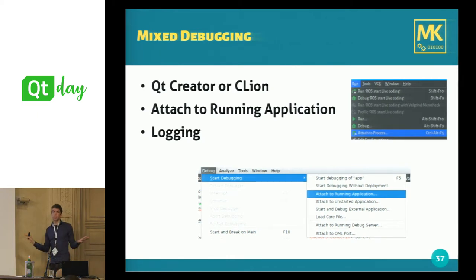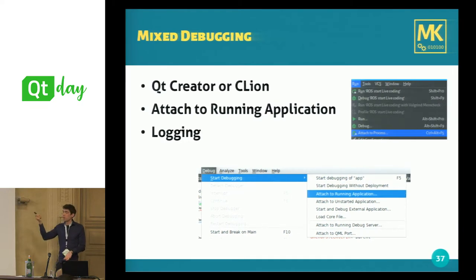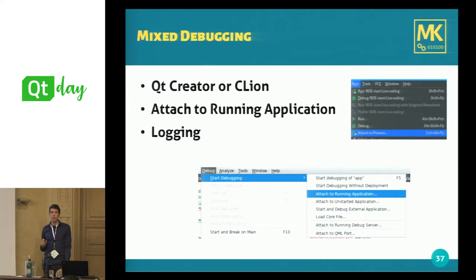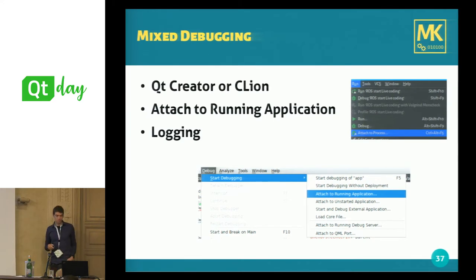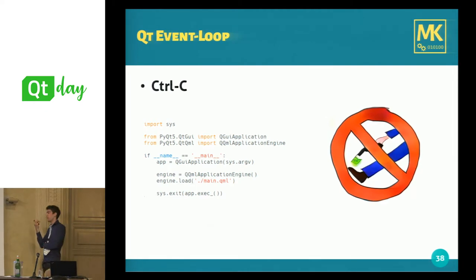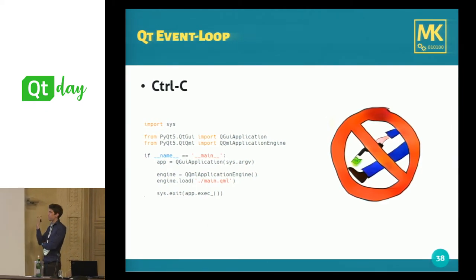If everything fails — for example, if an application crashes at startup or you don't have source code for the QML module you're using — you might want to check out logging. Logging is useful when you deploy your application and can't access it for debugging. With Python we have a specific logging module, and you can also use Qt's logging features, whichever you prefer.